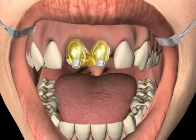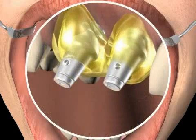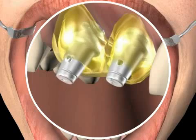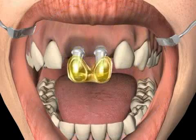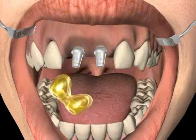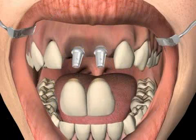Now in the animation, you see how the abutment is screwed together with the implant. Only then is the crown fastened. The crown is the part you see in the mouth.